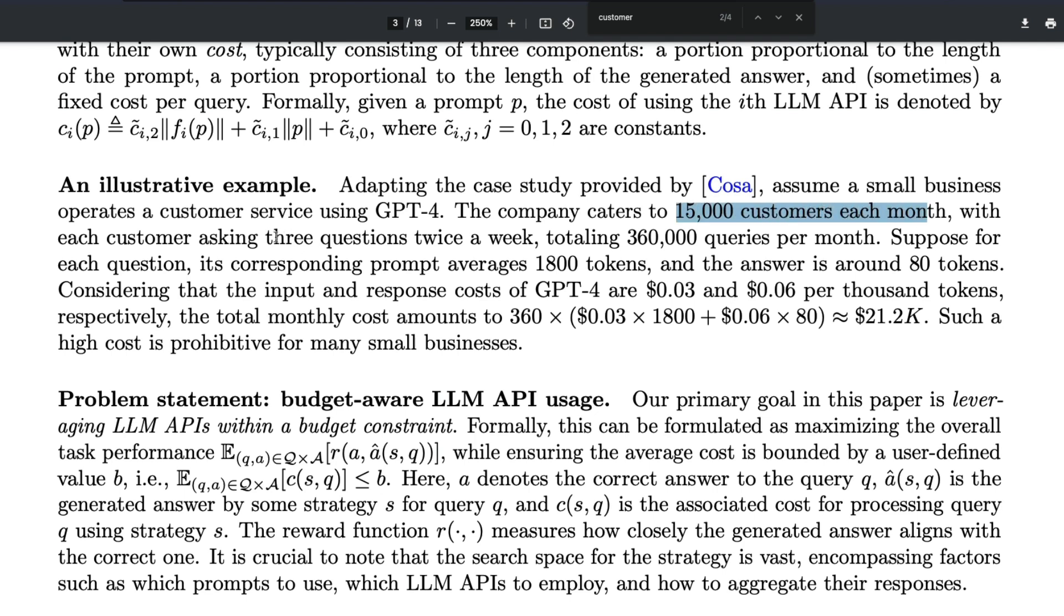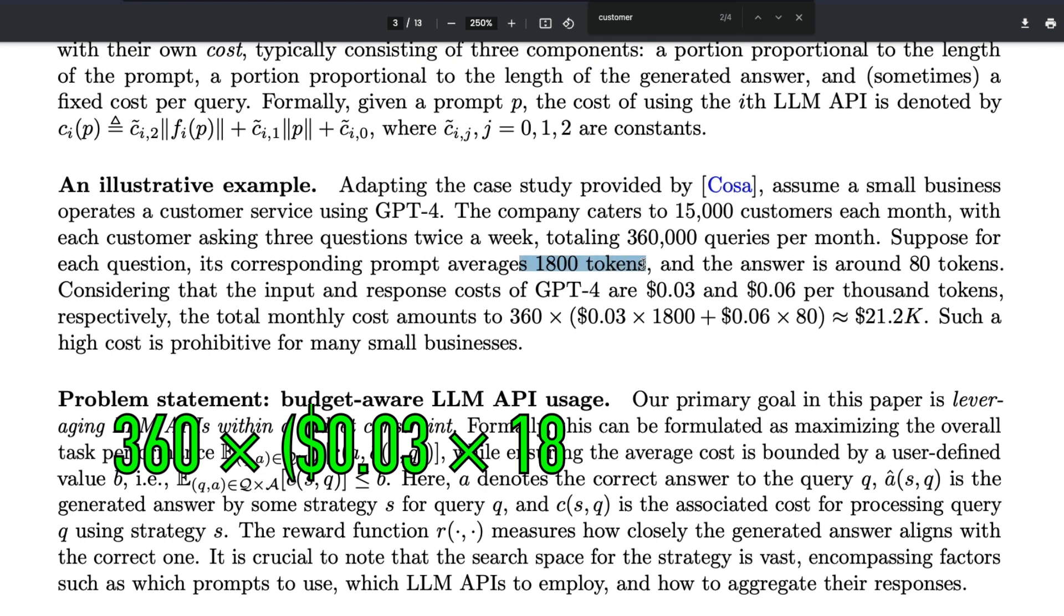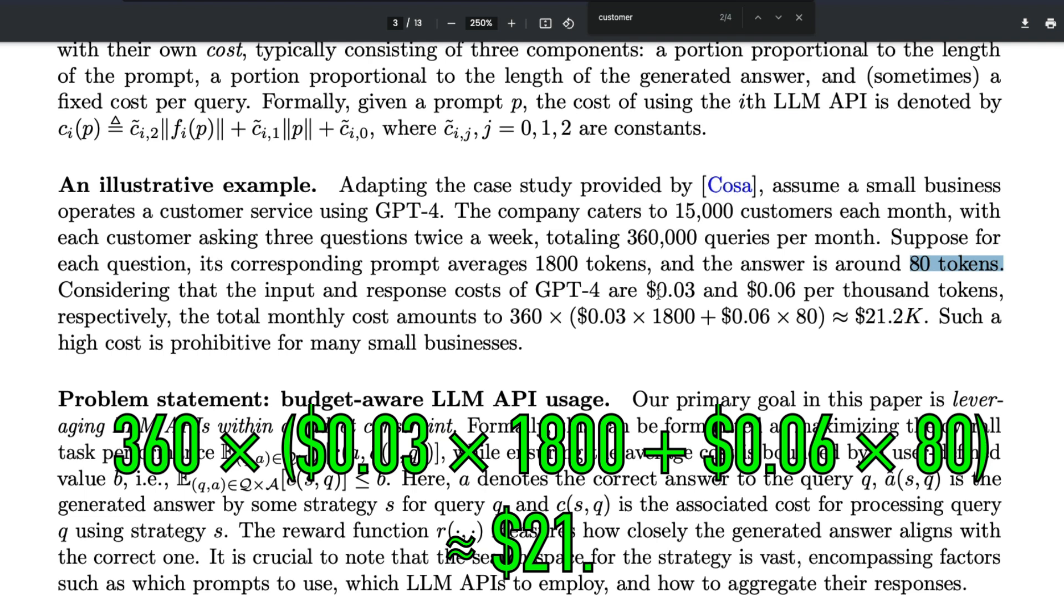Imagine you are running a customer support service using GPT-4. Let's say a company caters to 15,000 customers each month with each customer asking three questions twice a week—total about 360,000 queries per month. The prompt averages about 1,800 tokens, and the answer is around 80 tokens.